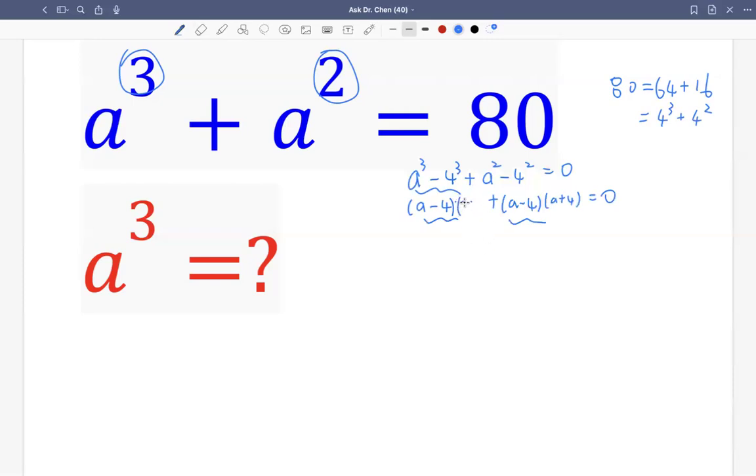Actually, let me just write it. That's a² + 4a + 16. So with the factor of a - 4, we have a² + 4a + 4², which is 16, plus this one, plus a + 4. So two factors: this factor and this factor.